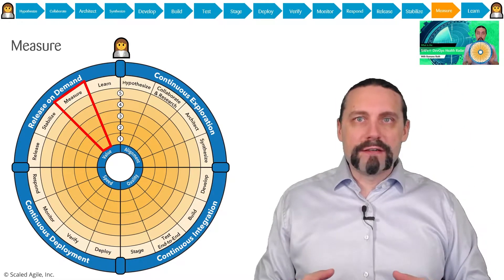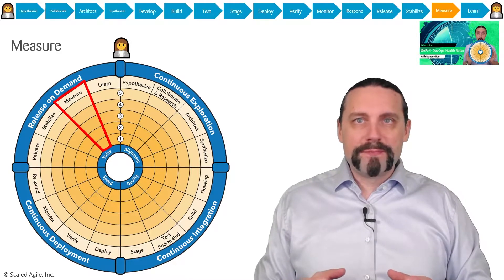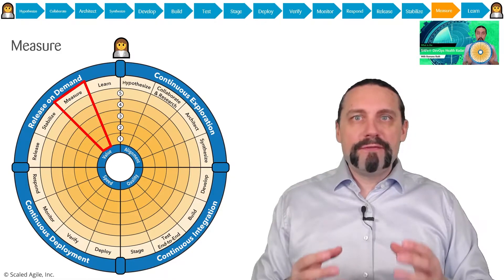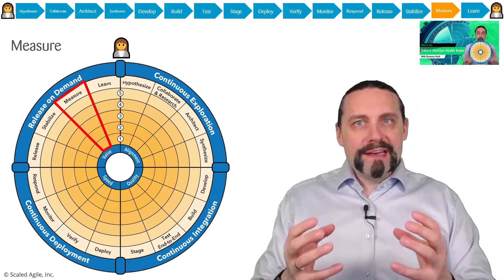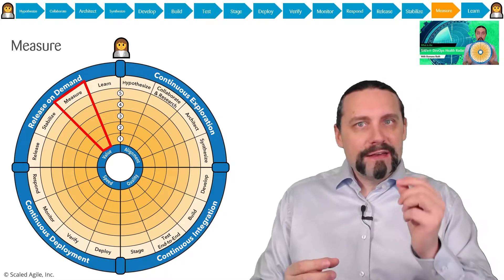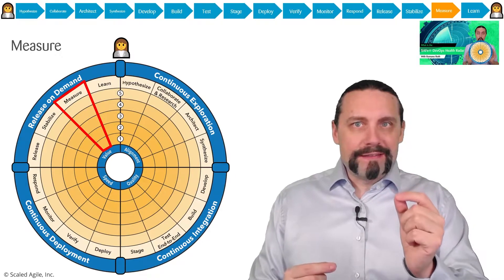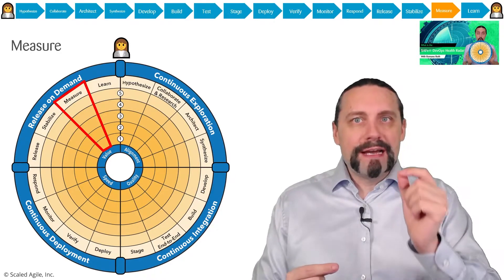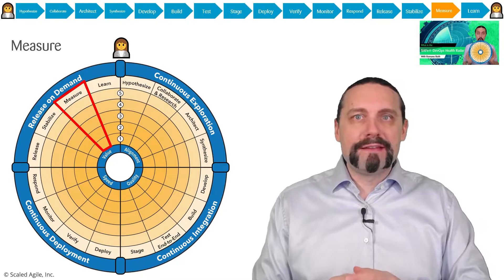The SAFe for DevOps health radar starts with the customer or business. They have bright ideas. We take these bright ideas and put them into epics and identify the real hypothesis behind this epic.